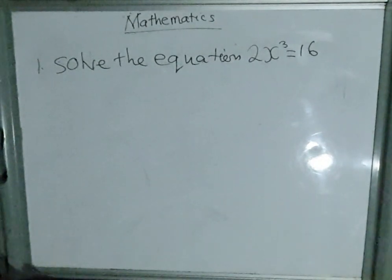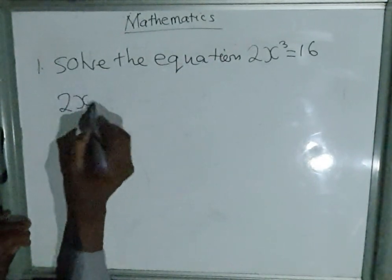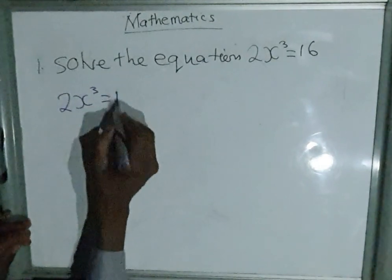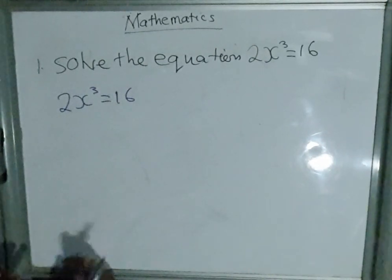In paper 1, as you may be aware, there is no need for a calculator, but we still need to find the solutions. We're going to copy the question down. We have 2x³ = 16. This is coming from the topic called indices, equations involving indices.